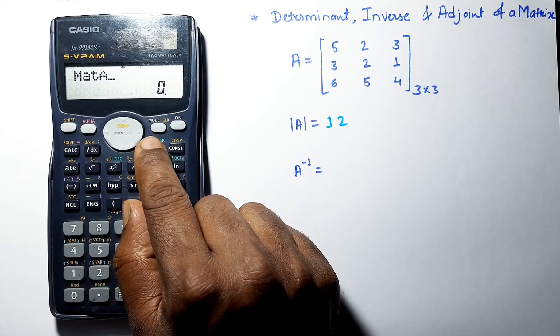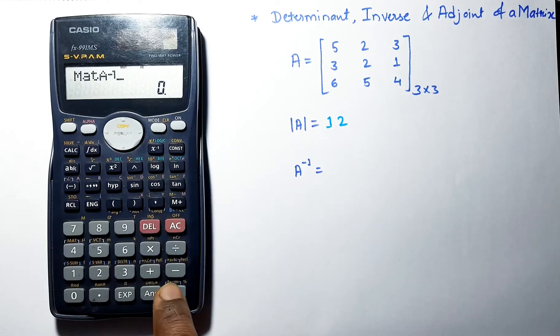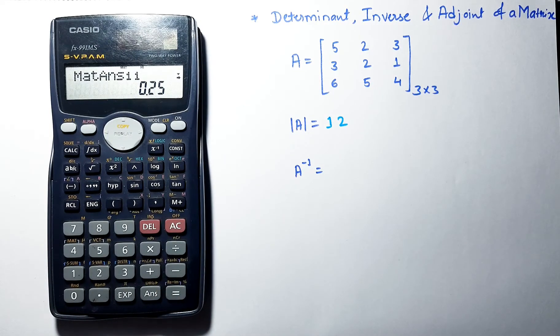To find the inverse, it's very simple. Select the matrix and just press the inverse symbol — the x⁻¹ button. Press this inverse key and we are getting the inverse of the matrix.